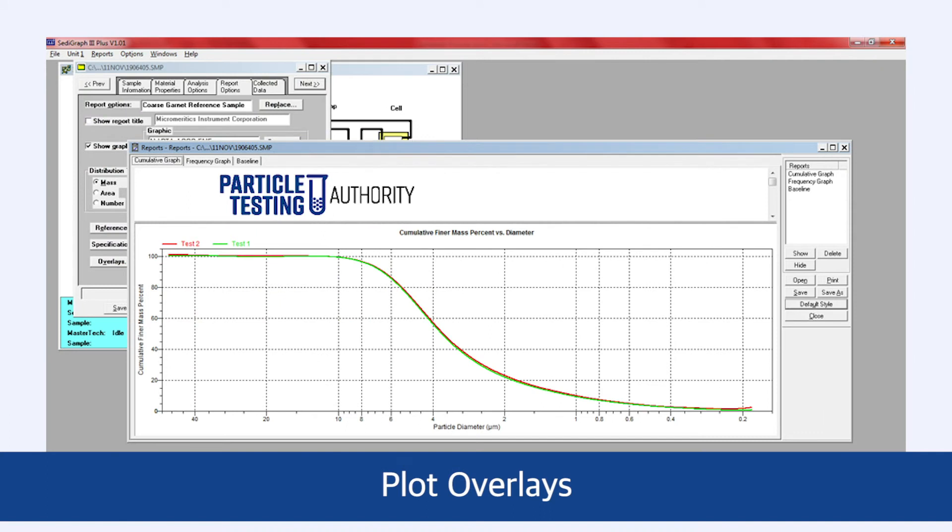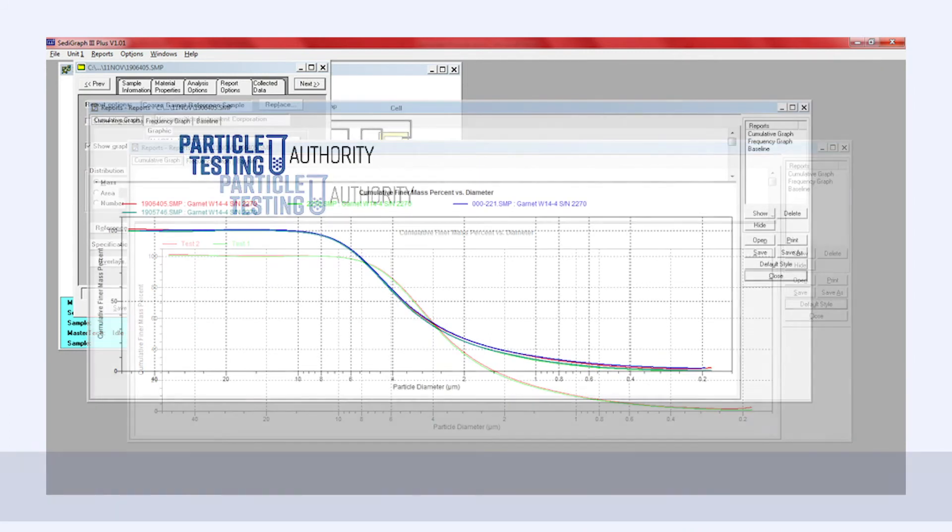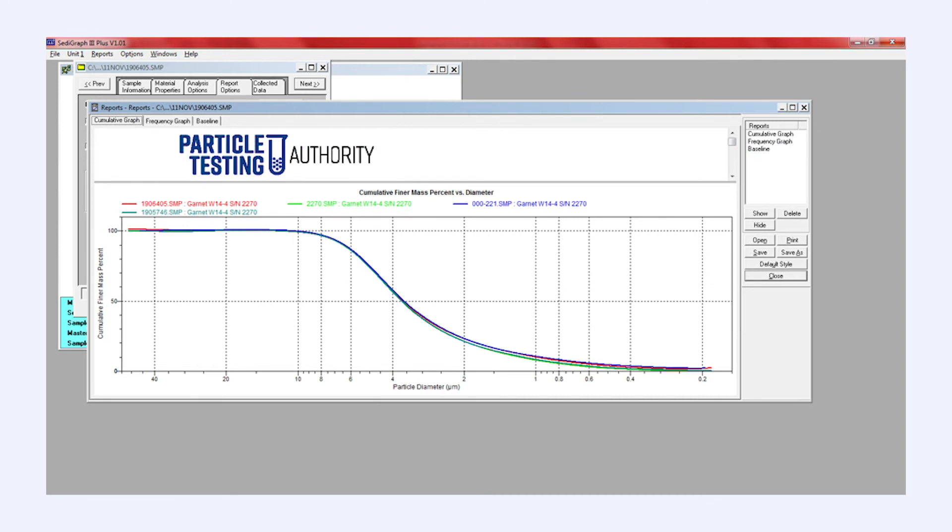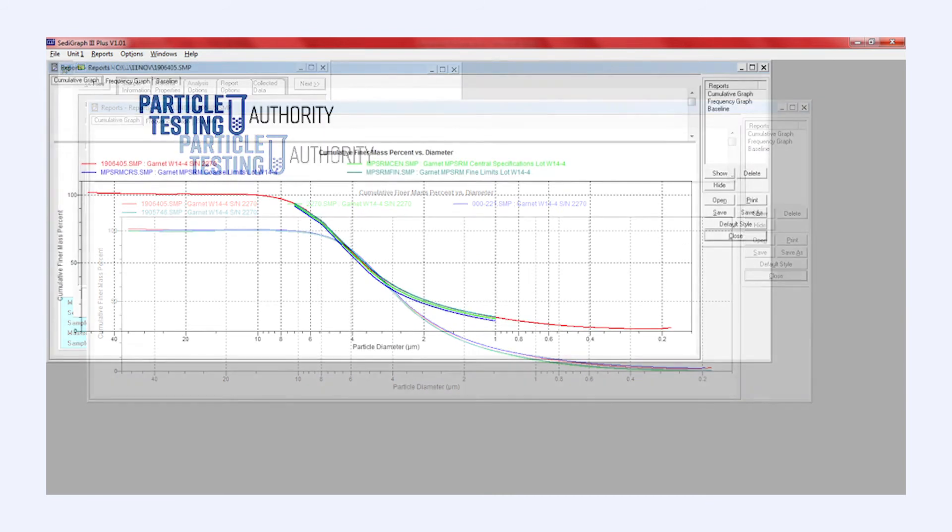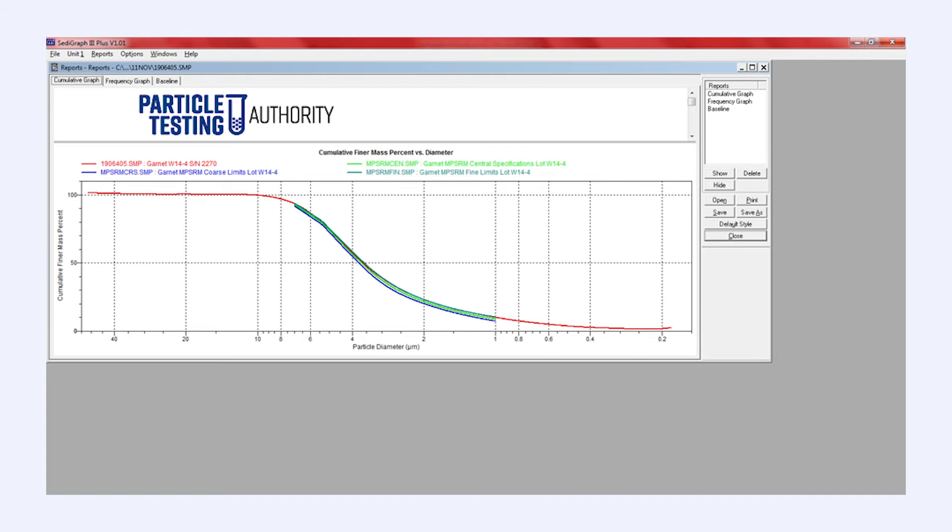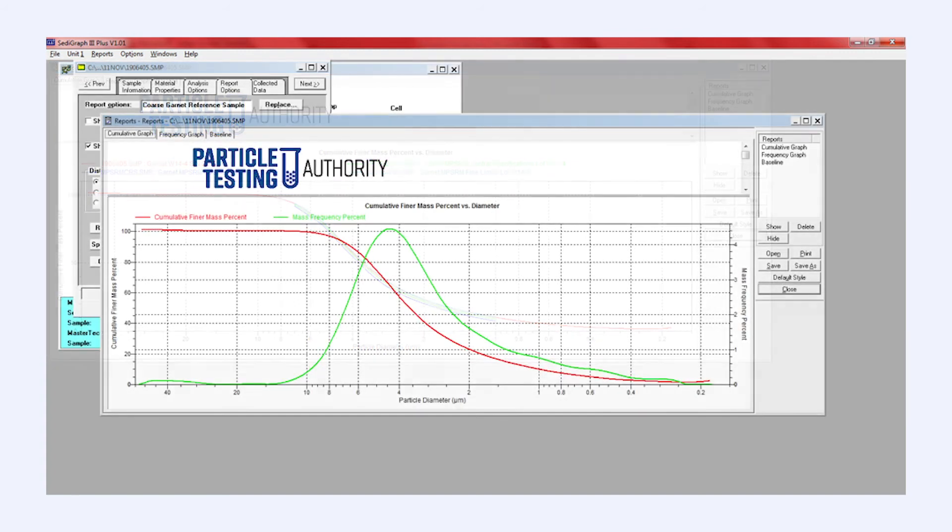The Setagraph 3 Plus also features plot overlays that provide a visual comparison of analysis results from one or more analyses, a reference or baseline analysis for example, or a superposition of two different types of plots of the same analysis data.